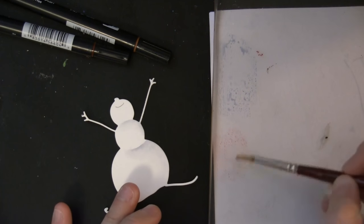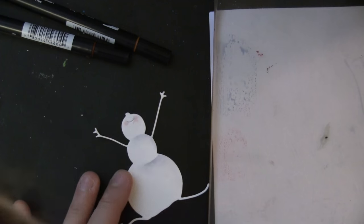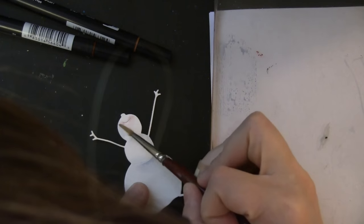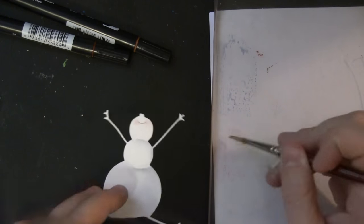I wanted to give his cheeks a little bit of blush. So again, picking up that marker color with a little water in my paintbrush, and then also blending it with just some water. And he was die cut from watercolor paper.